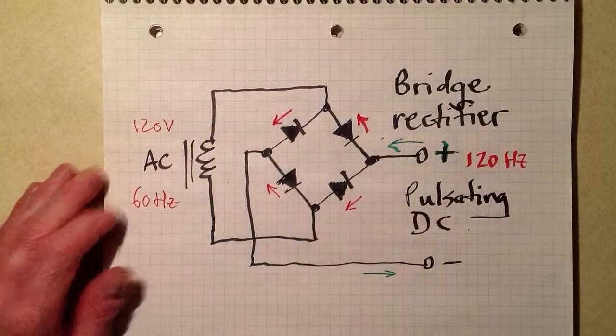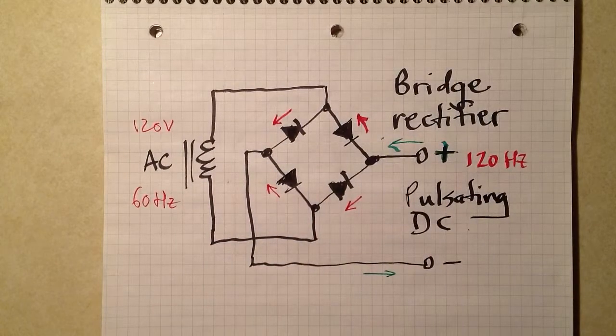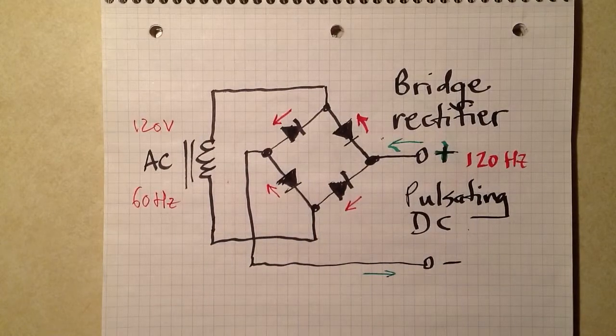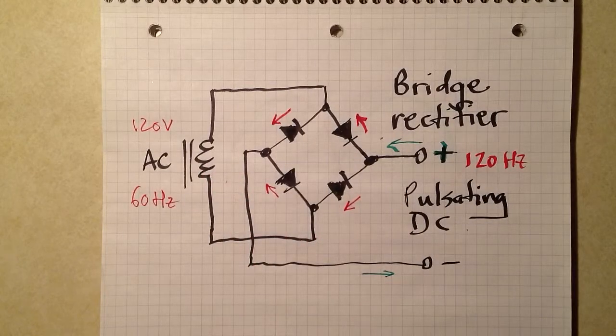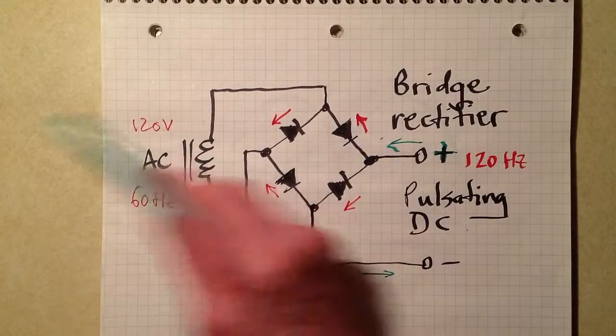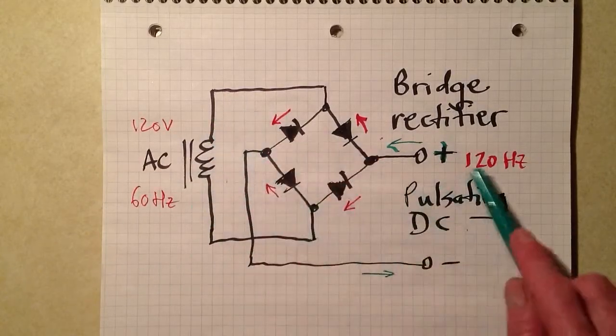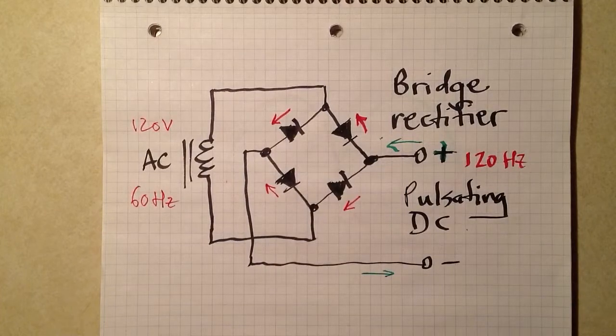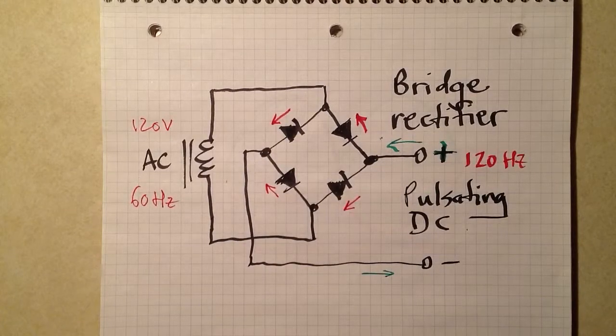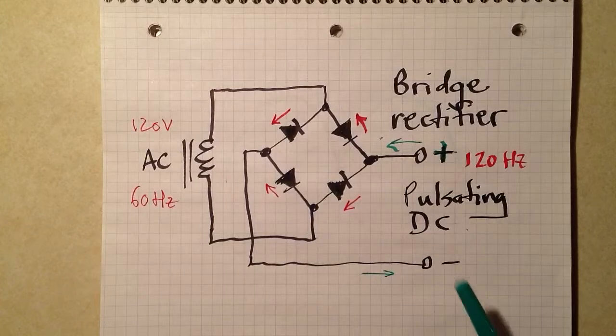Full-wave power supplies are preferable to half-wave supplies for a variety of reasons. One, they're easier on the transformer because they don't pump it. It's not a lopsided load, it's a more balanced load. The other reason is that a 120-hertz ripple is easier to filter than a 60-hertz ripple.